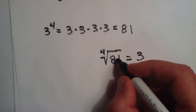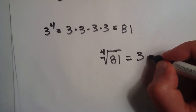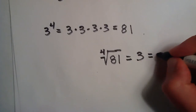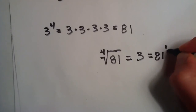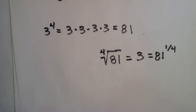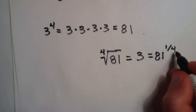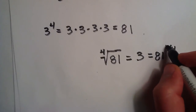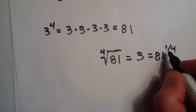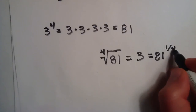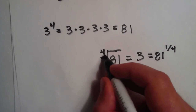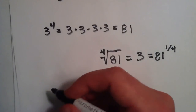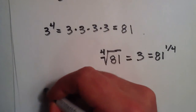Now, the fourth root of 81 can also be written as 81 to the one-fourth power. So if you want to write it in terms of the power, you just put a fraction — 1 divided by whatever the base of the root was.